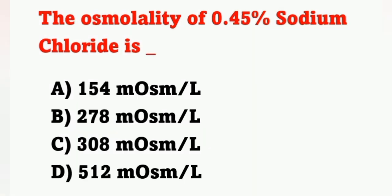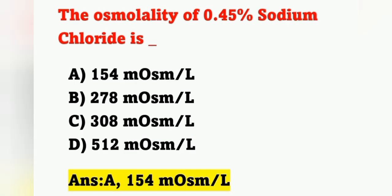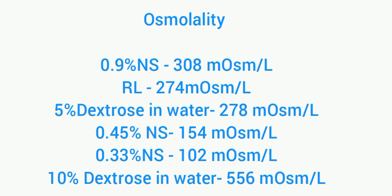Next question: the osmolality of 0.45% sodium chloride is — Option A: 154 milliosmol per liter. Option B: 278 milliosmol per liter. Option C: 308 milliosmol per liter. Option D: 512 milliosmol per liter. The correct answer is Option A: 154 milliosmol per liter. 0.45% sodium chloride is a hypotonic solution with osmolality of 154 milliosmol per liter.